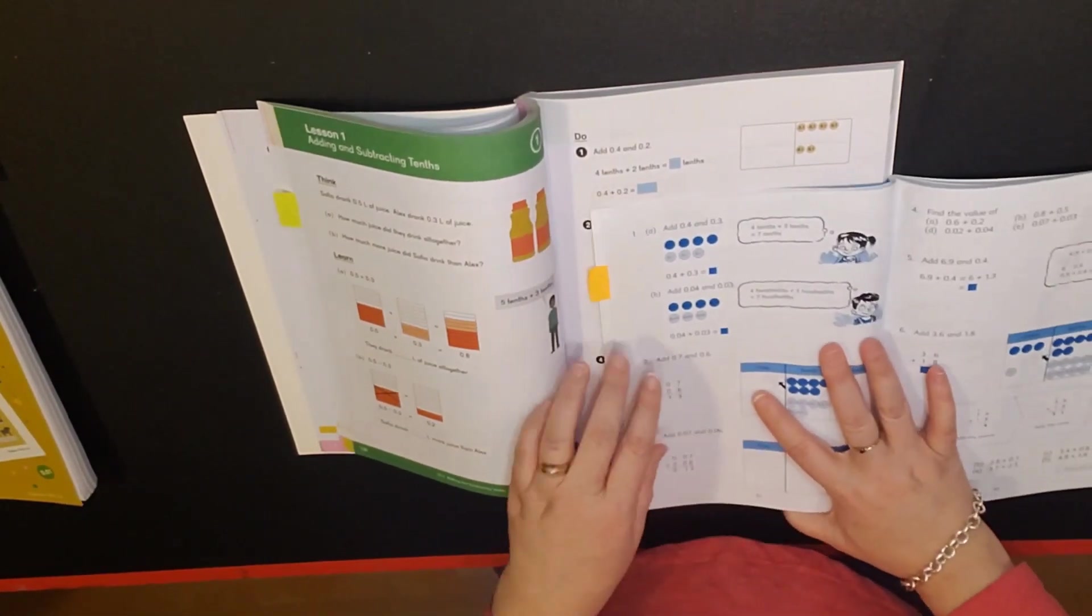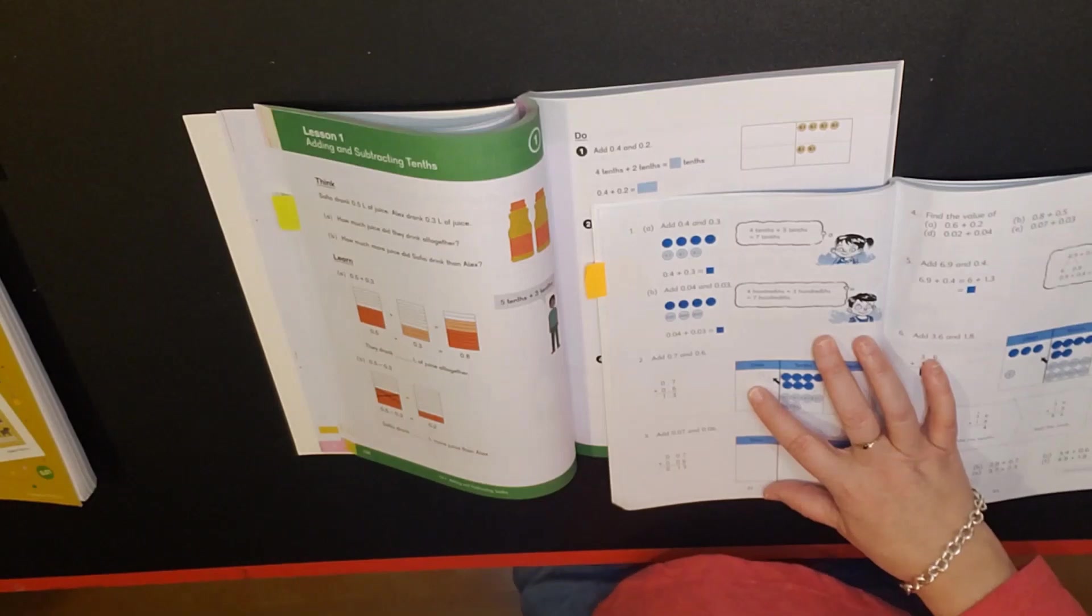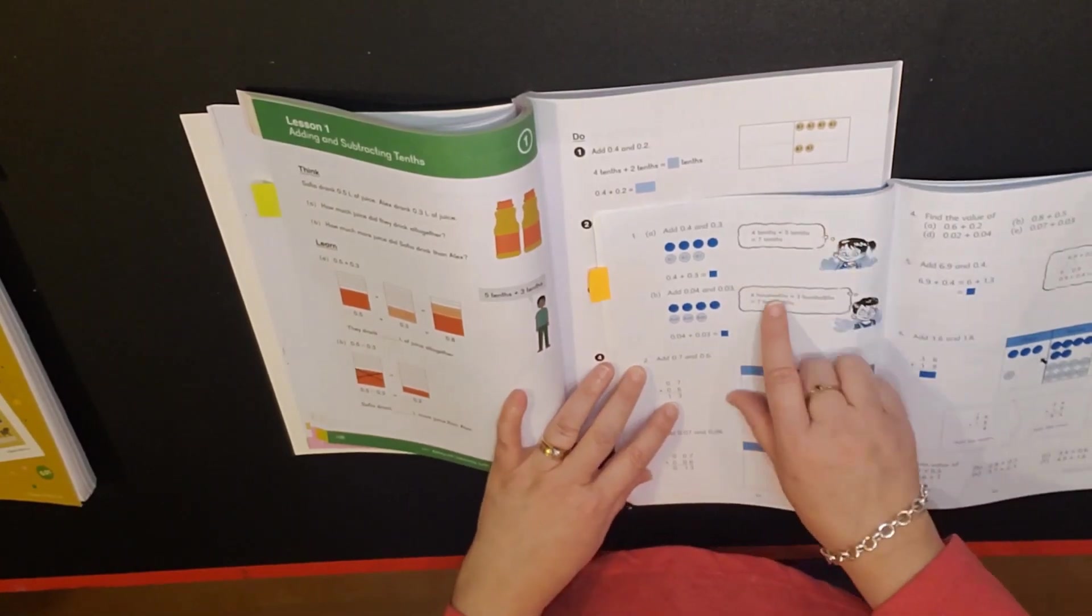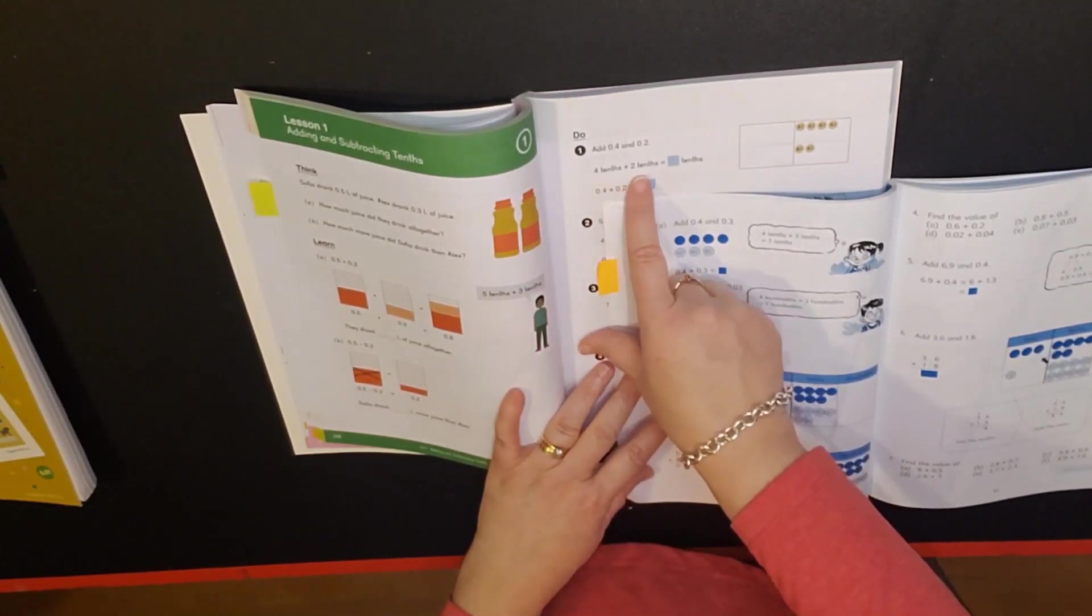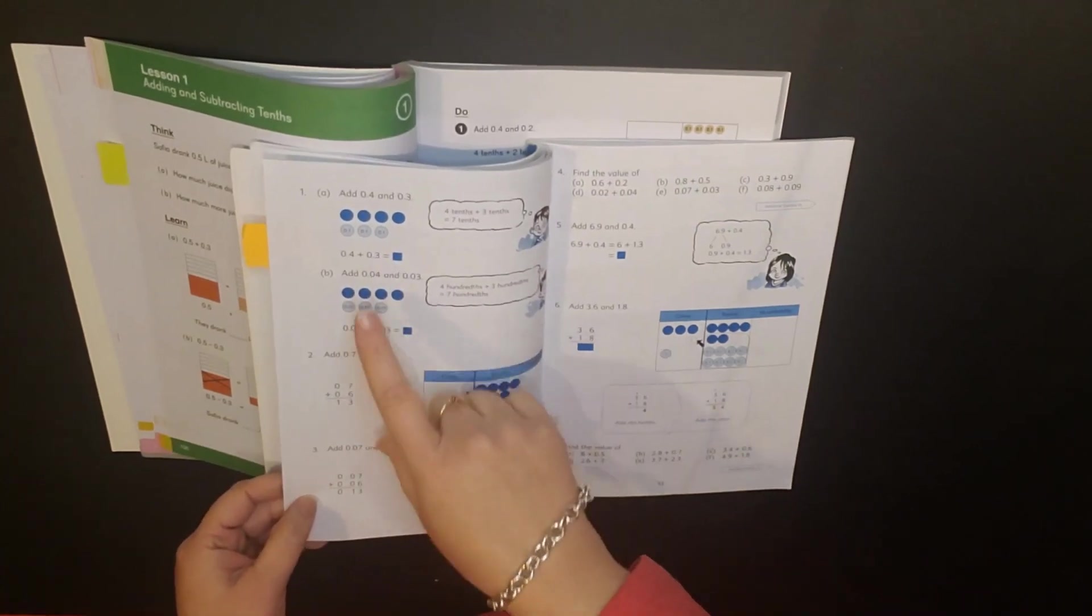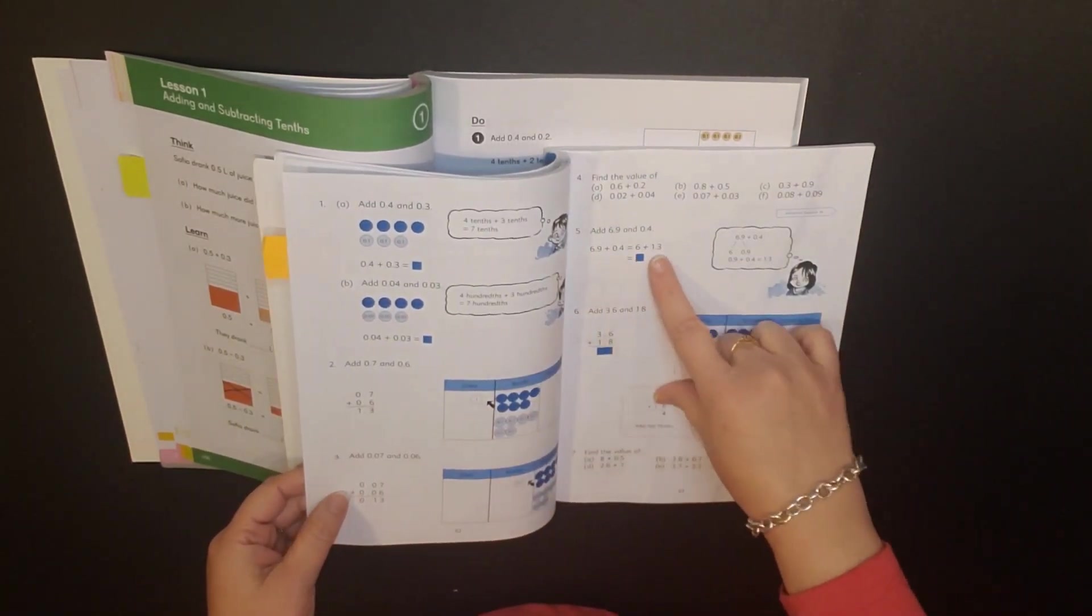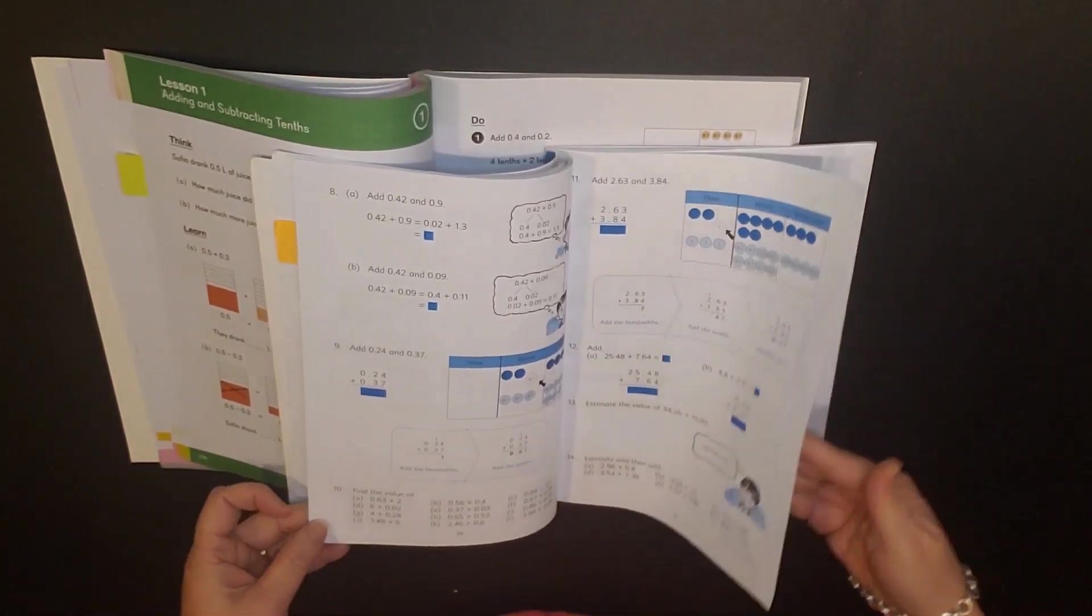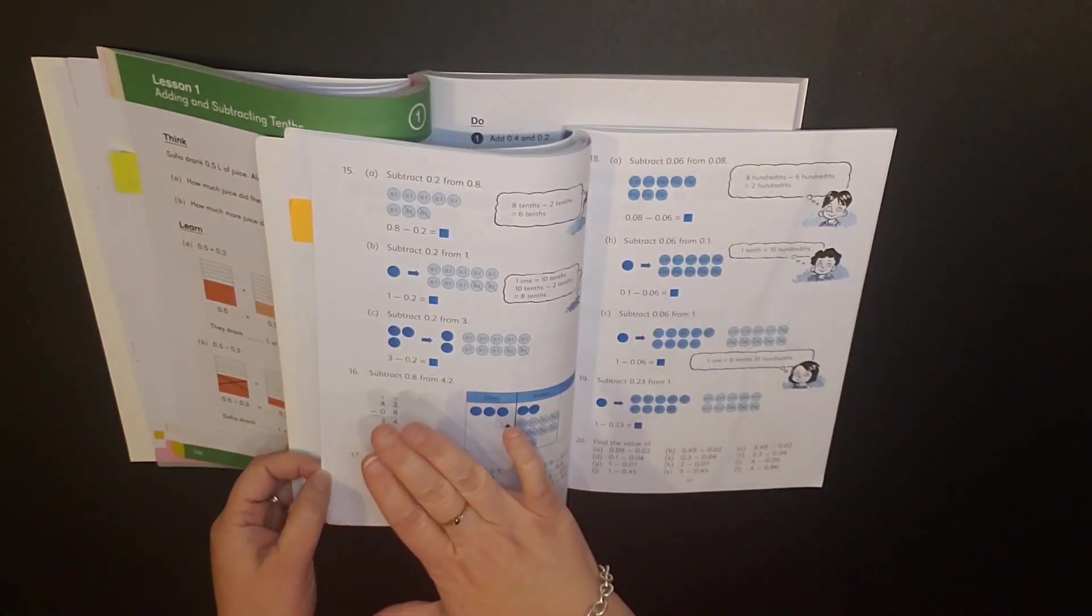So then we go into some of the practice. For this one, first question it's add 4 tenths and 3 tenths. This one in dimensions is 4 tenths and 2 tenths so you're basically having a very similar problem. This one will include your disks pictorially, this one includes it as well. And then you have it written out: 4 tenths plus 3 tenths equals 7 tenths. Now dimensions does not give you that answer, so 4 tenths plus 2 tenths equals how many tenths. Both require you to give your answer in the blue box. You are adding tenths and hundredths all within the same lesson. You'll do the addition and then you get into subtraction, 14 problems for addition then you go into subtraction.